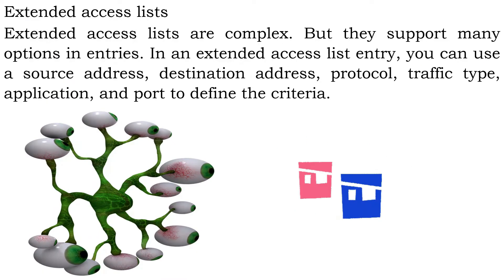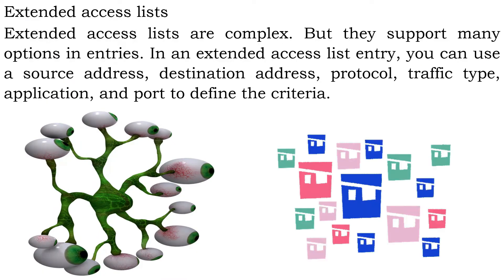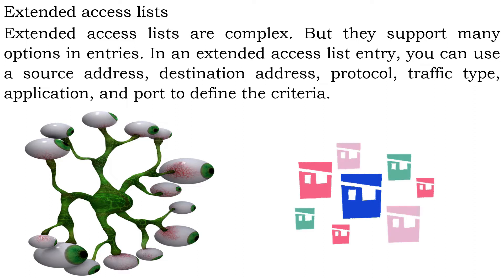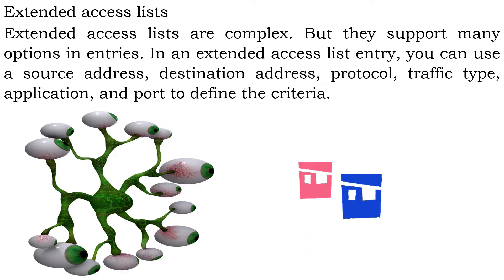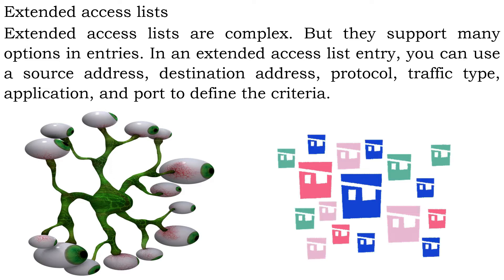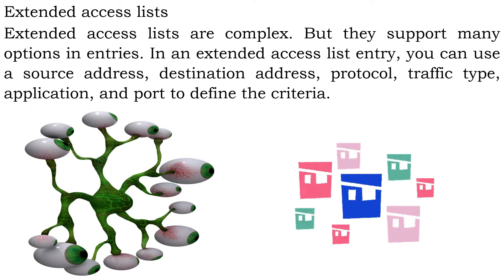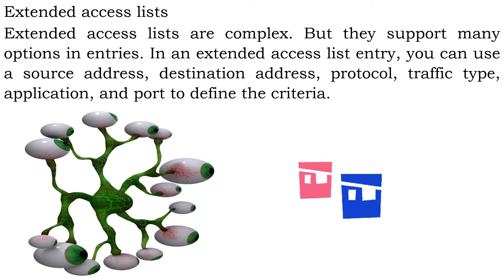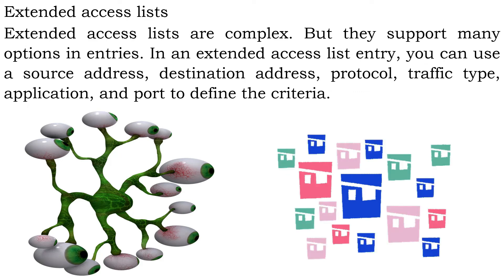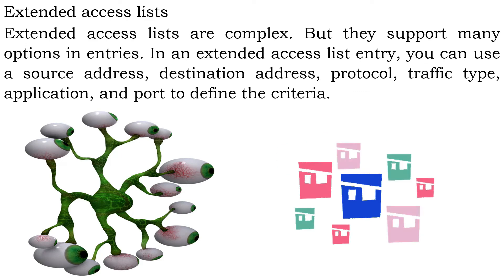Extended access lists are complex, but they support many options and entries. In an extended access list entry, you can use a source address, a destination address, protocol, traffic type, application, and port to define the criteria.